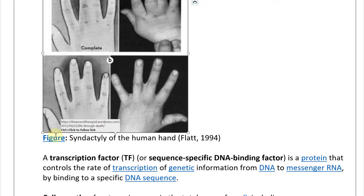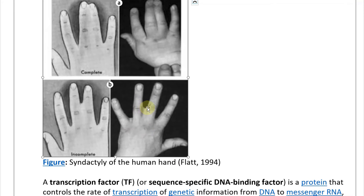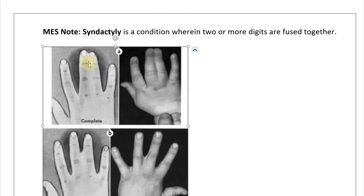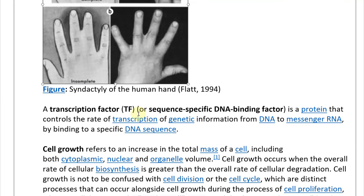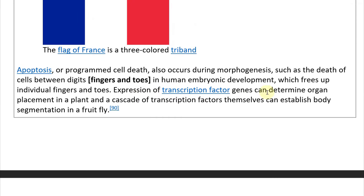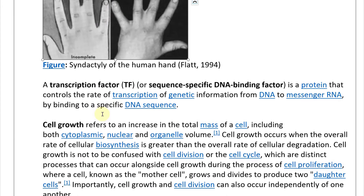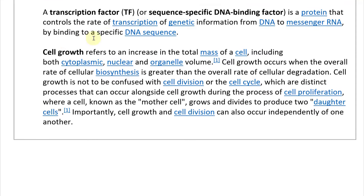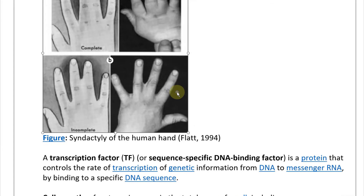The image of syndactyly shows fingers fused together — a pretty extreme condition. A transcription factor is a protein that controls the rate of transcription of genetic information from DNA to messenger RNA by binding to a specific DNA sequence. Expression of transcription factor genes can determine organ placement in a plant, and a cascade of these factors can establish body segmentation in a fruit fly.